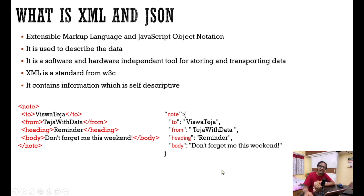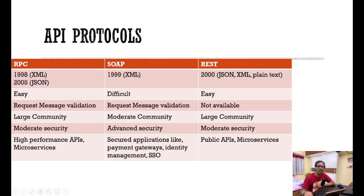Parsing JSON in any programming language is very easy because it's like a dictionary, whereas with XML you have root nodes and child nodes you have to traverse. So JSON is widely used. SOAP, from around 1999, supports only XML. REST, from around 2000, is the most widely used API protocol today and supports JSON, XML, and plain text — it supports most formats.